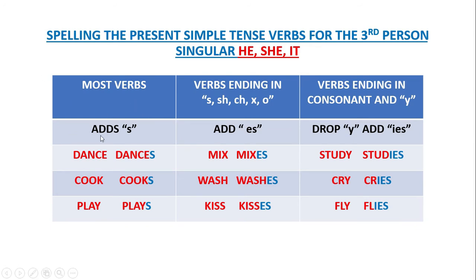Let me repeat the rules. Most verbs: add S. Verbs ending in S, SH, CH, X, and O: add ES. Verbs ending in consonant and Y: drop the Y and add IES. If you understand this, you won't have any problem with these verb forms. When you read those verbs in these forms, you can recognize that the text is using the present simple tense.